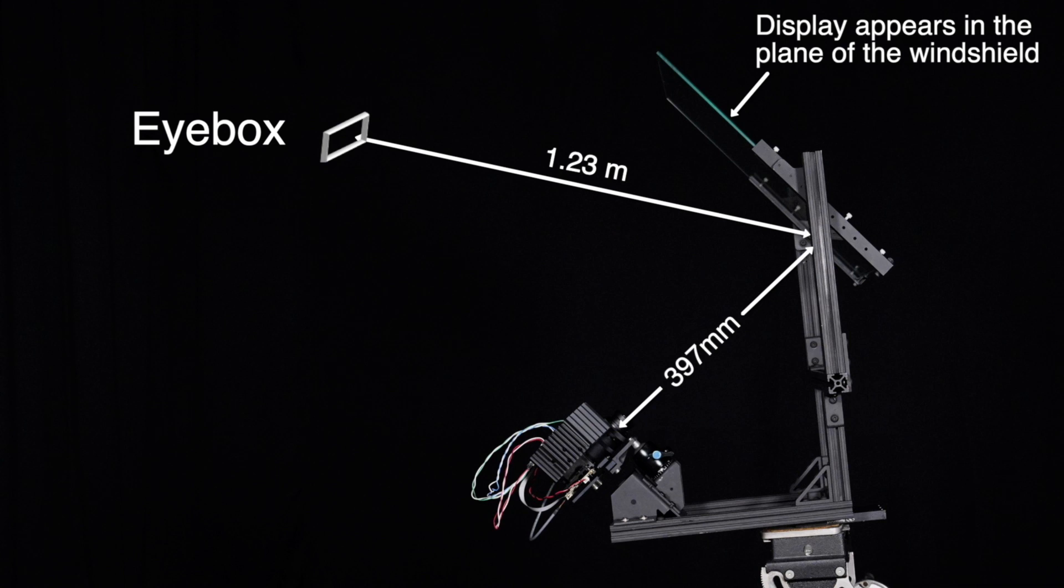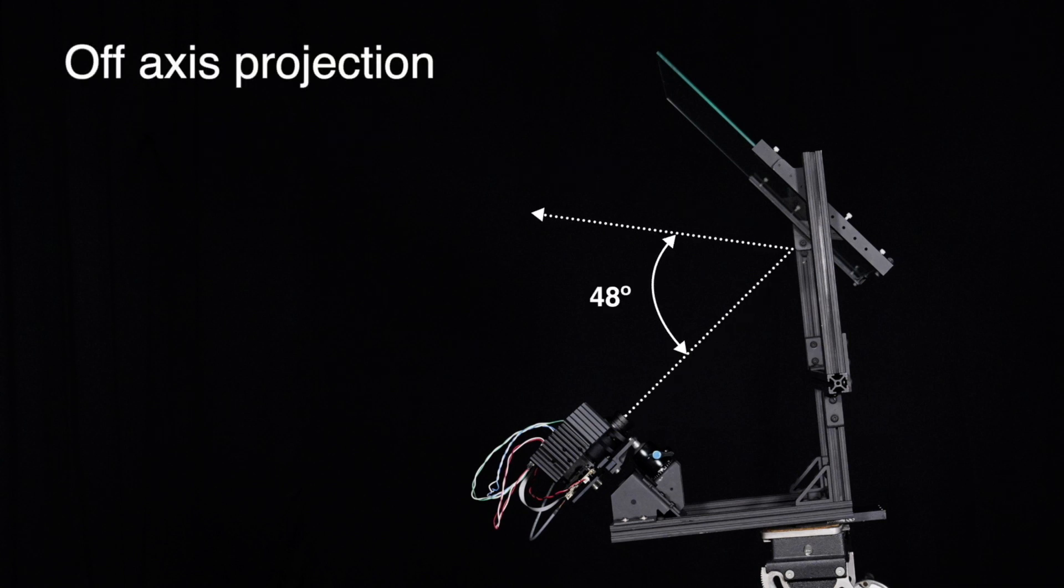An interesting property of holographic films is that they support off-axis projection. From an optical design perspective, the projector's angle of incidence does not need to equal the angle of reflection. For example, in this demo, the projector's illumination angle is normal to the film, but the angle of reflection to the eye box is at 48 degrees.